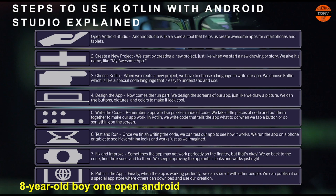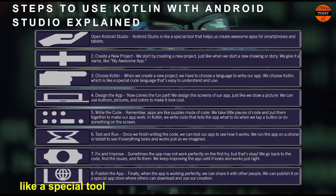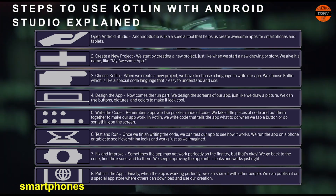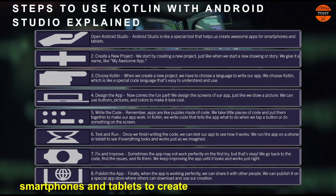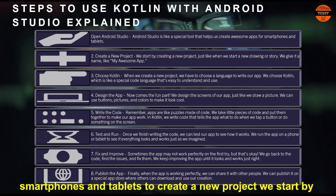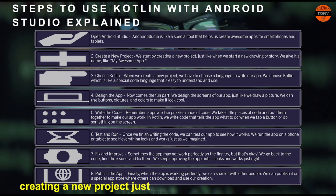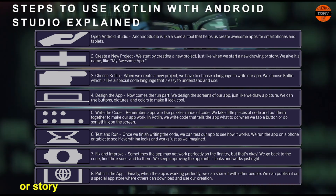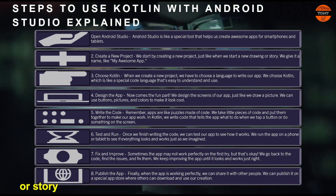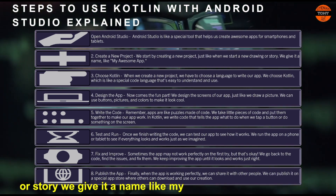Step 1: Open Android Studio. Android Studio is like a special tool that helps us create awesome apps for smartphones and tablets. Step 2: Create a new project. We start by creating a new project, just like when we start a new drawing or story. We give it a name, like 'My Awesome App.'